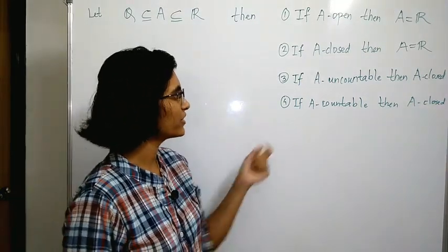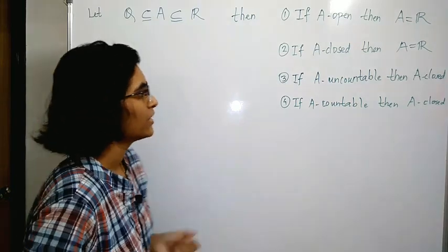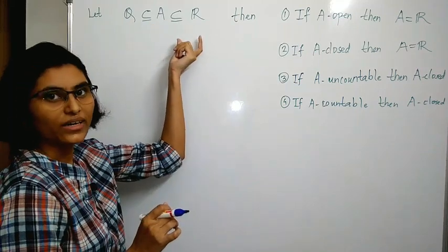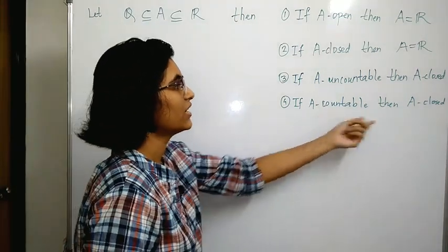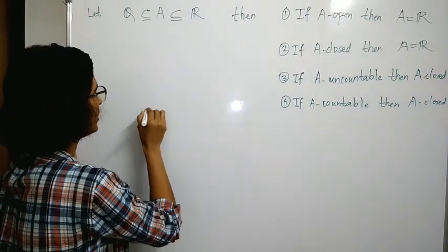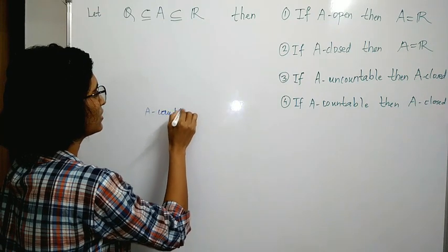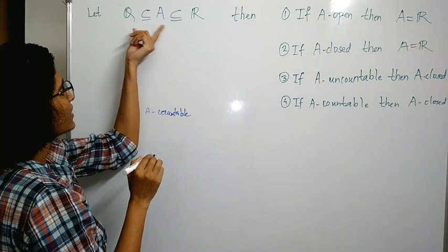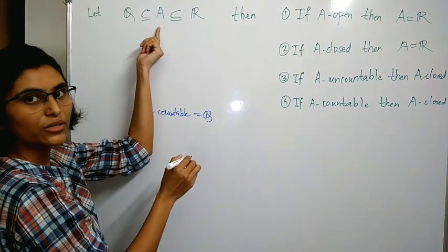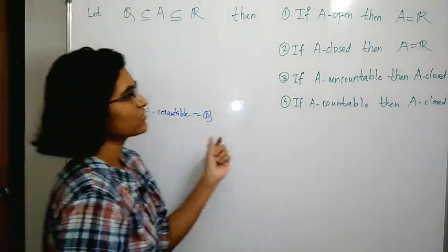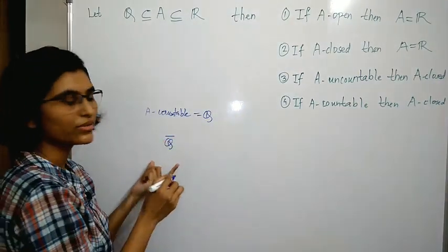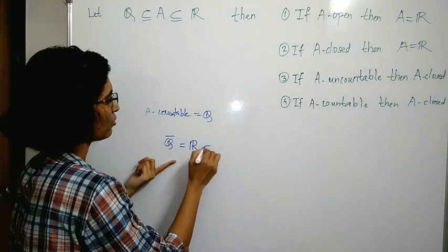By looking at this question we can discard the fourth option easily. Since Q is a subset of A which is a subset of ℝ, if A is countable then A is closed — this is not true, because we can take A to be Q. This A is countable because Q is countable, and Q is not a closed set.